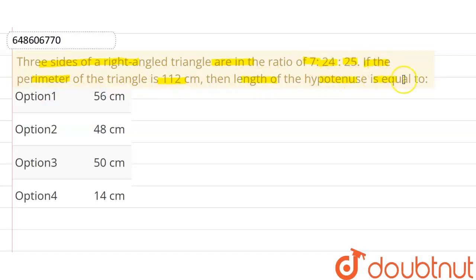then length of the hypotenuse is equal to: option 1 is 56 cm, option 2 is 48 cm, option 3 is 50 cm, option 4 is 14 cm.